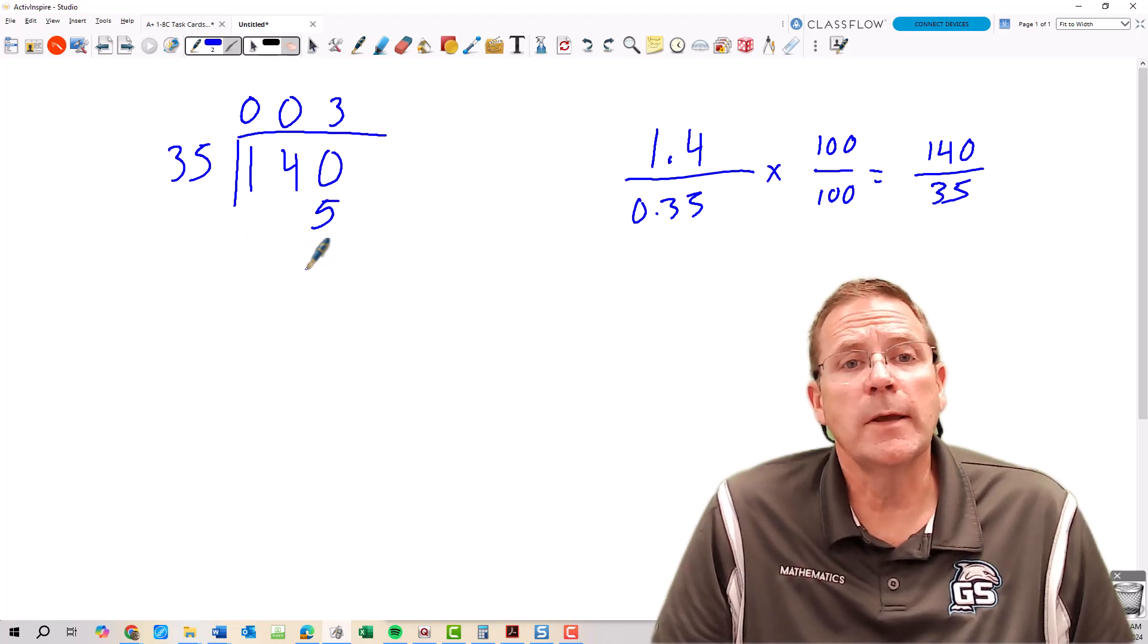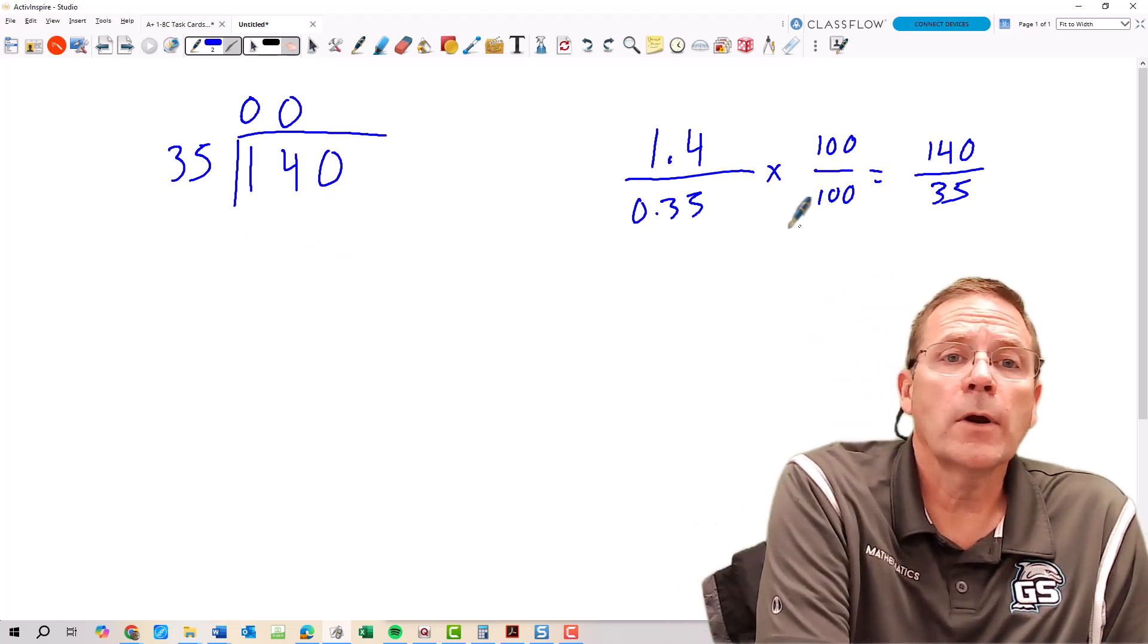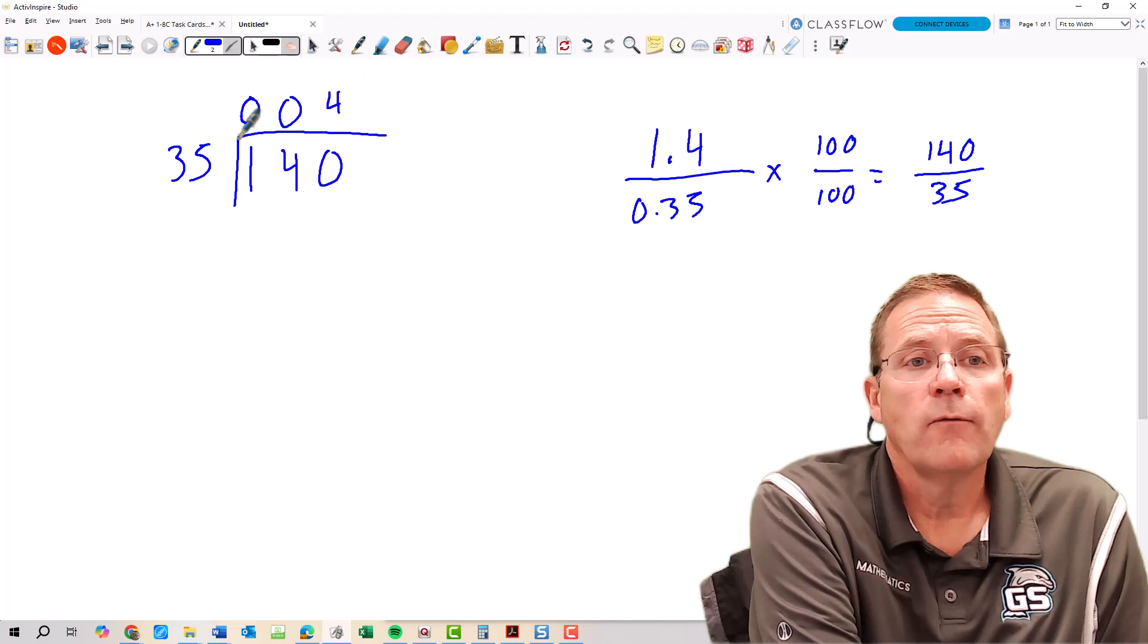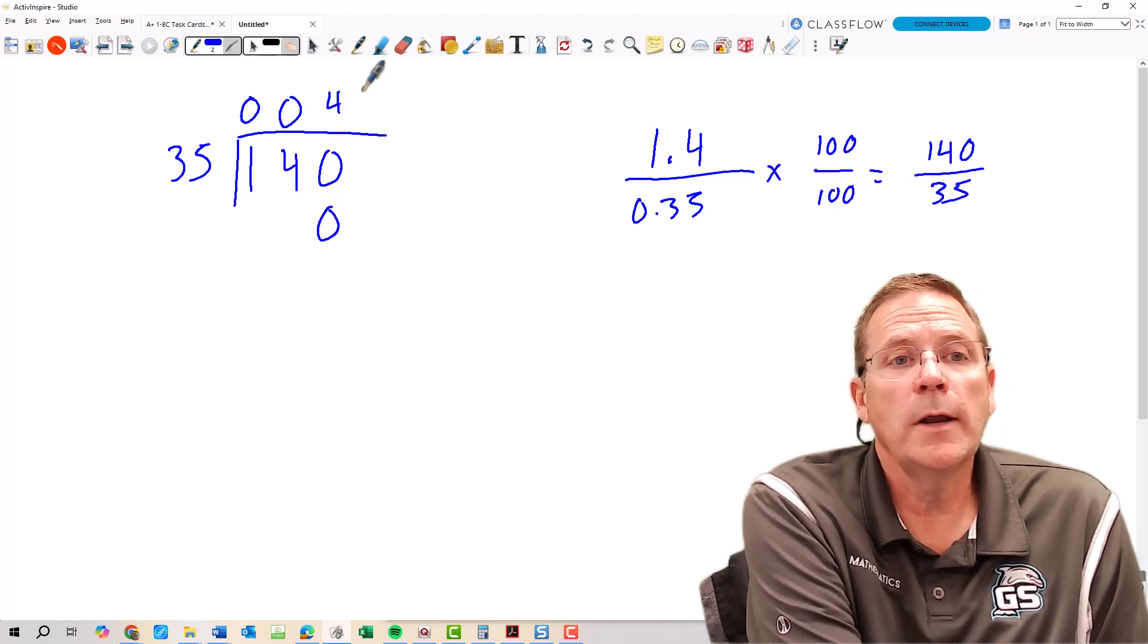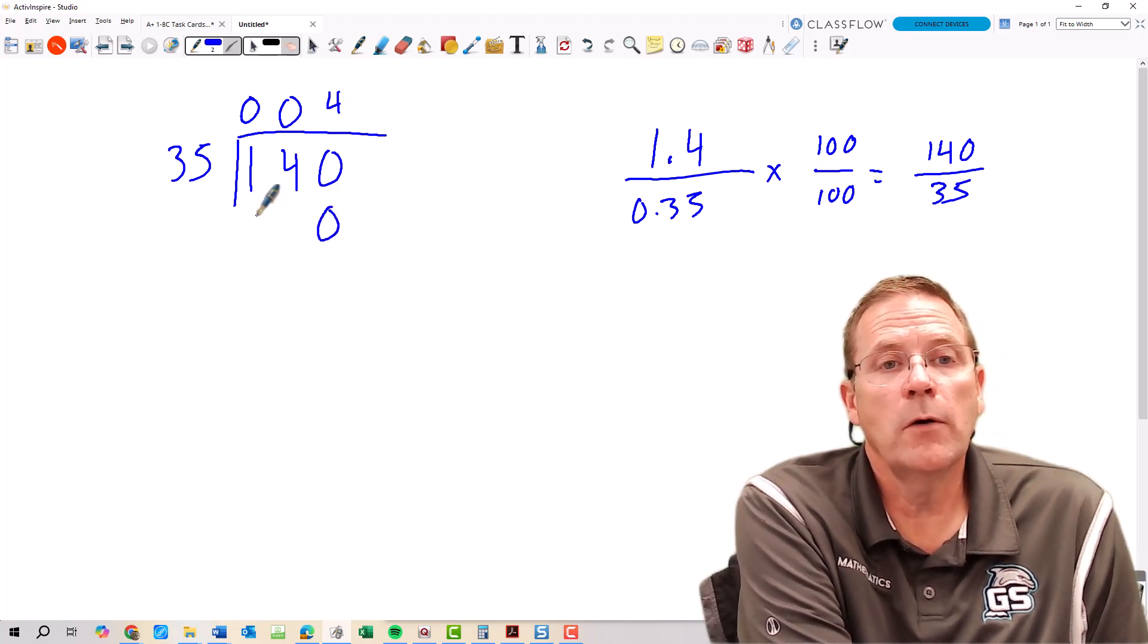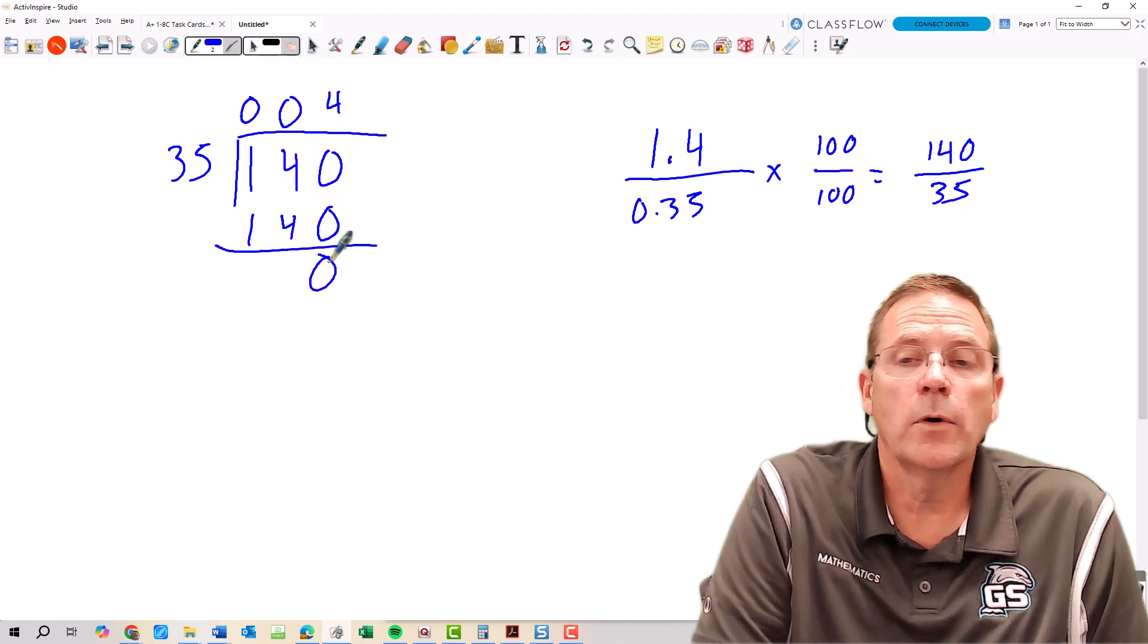4 is actually going to be the correct answer here. So now we're going to try the 4 up here. 4 times 5 is 20, 4 times 3 is 12 plus a 2 from the 20 is going to give us 14. And there's your 140.